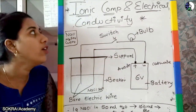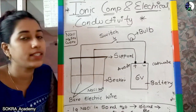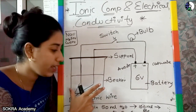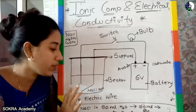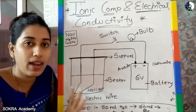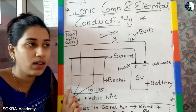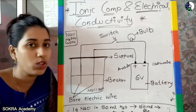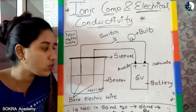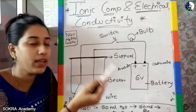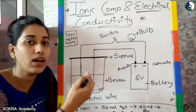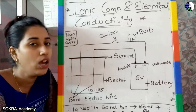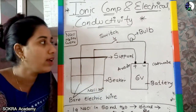Hello students, today we are going to see ionic compounds and electrical conductivity. Here I have a beaker, and we are going to pass electricity through it. We are going to take a beaker, a battery, wires, and a bulb. From the bulb, we can know that if it glows, then we have electricity. We also have a switch.